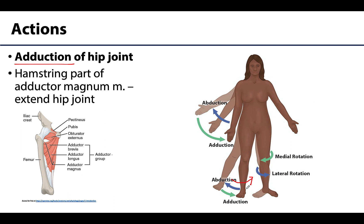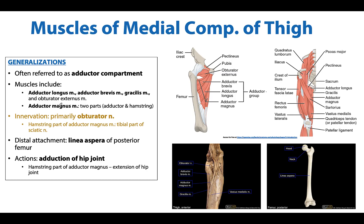The hamstring part of the adductor magnus always has to be the odd one out. Once you learn the specifics of the posterior compartment of the thigh, you can lump that part in with those muscles, but the hamstring part of the adductor magnus will assist the hamstrings in extension of the hip joint.